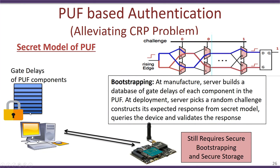One popular approach is the secret model of PUF. Instead of querying the device with different challenges and storing all challenge-response pairs in a database, the manufacturer studies the properties of the PUF and creates a model for that particular PUF. For example, the server could build a database of the gate delays present in an arbiter PUF and store that model. Given a particular challenge, this model can create a very good estimate of what the response for that specific PUF should be.